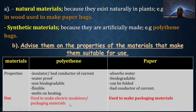Polythene can be used to make electric insulators and packaging materials like polythene bags. Alternatively, if a student chooses paper, give four properties of paper and one use. Paper absorbs water, is biodegradable, can be folded, and is a bad conductor of current. It is used to make packaging materials. Select only one material — either polythene or paper — and provide four properties and one use.